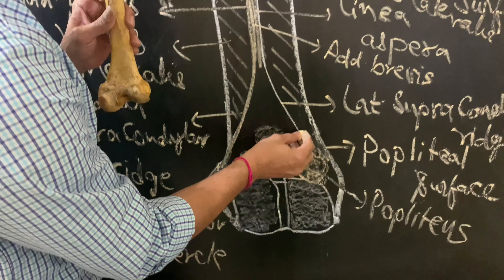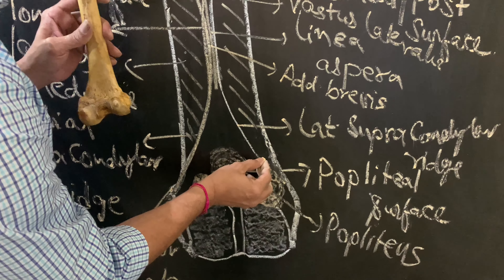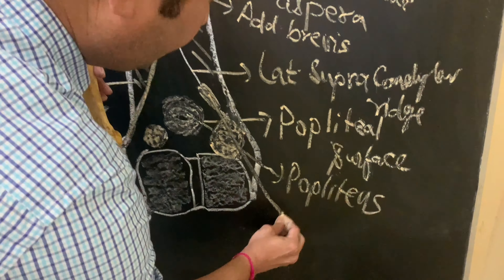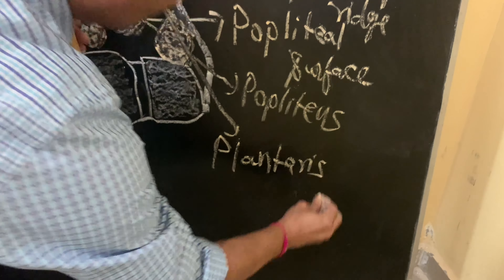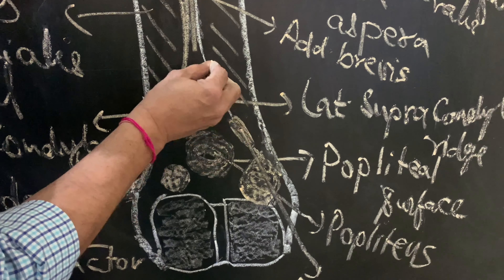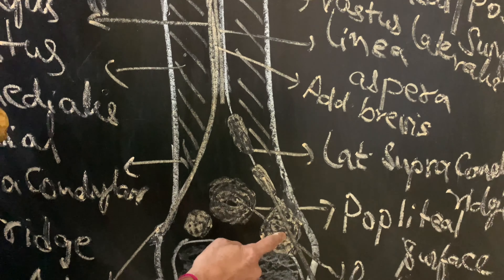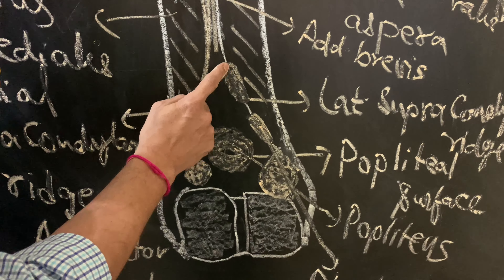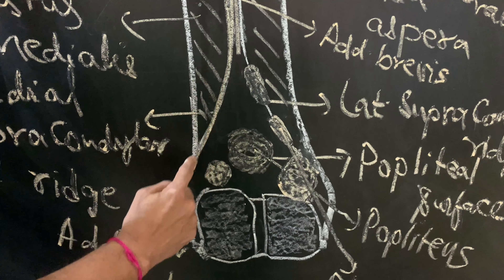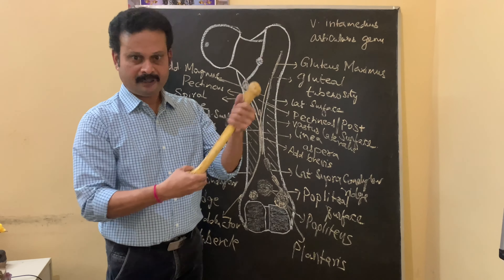Just above the attachment of the lateral head of gastrocnemius, it is the origin of a muscle called plantaris. Further upwards onto the lateral supra-condylar ridge is the short head of biceps femoris. So from above downwards on the lateral supra-condylar ridge: short head of biceps femoris, plantaris, and lateral head of gastrocnemius are attached, whereas on the medial supra-condylar ridge it is only the adductor magnus muscle which is attached.